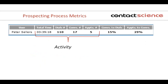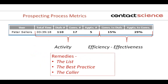When I talked about metrics, here's an example of metrics that we track automatically — the manager, caller, salesperson has to do nothing. The tool itself measures these metrics. I can look here and see that Peter Sellers spent about 3 hours and 40 minutes on the phone, made 110 dials, and got into 17 conversations. Out of those 17 conversations, he set 5 appointments. The conversations-to-dial ratio was 15%, and he was able to set 29% of his appointments from those conversations. From this tool alone, you can gauge the viability of your list, your best practice, and the skills of your caller.